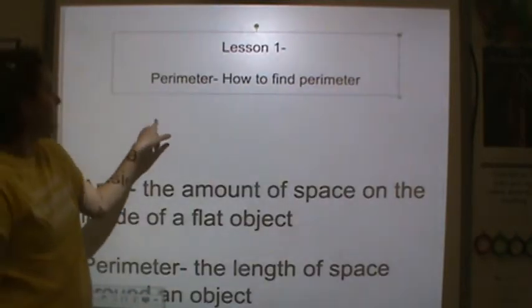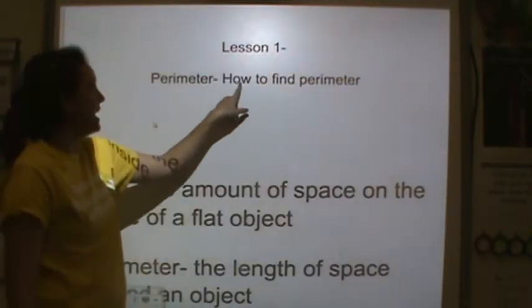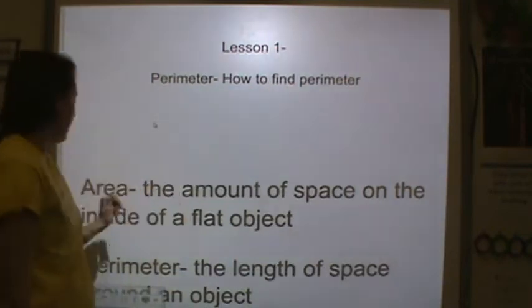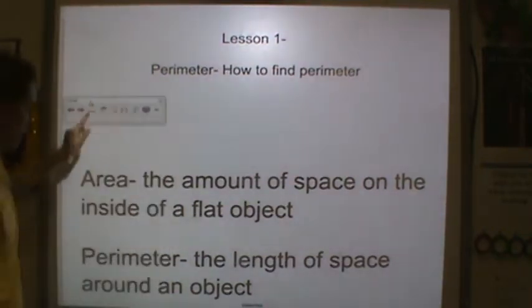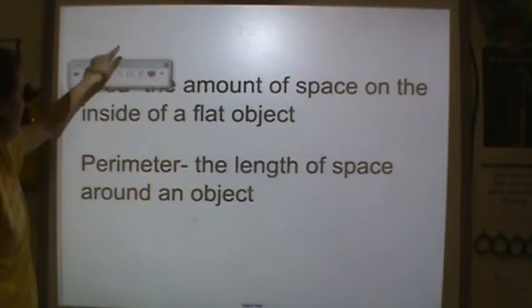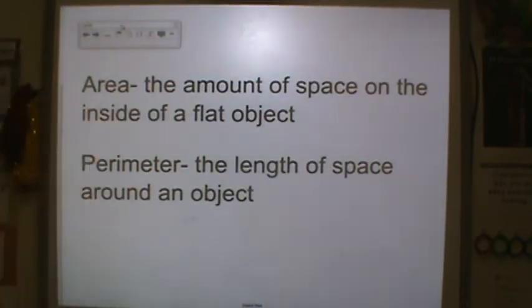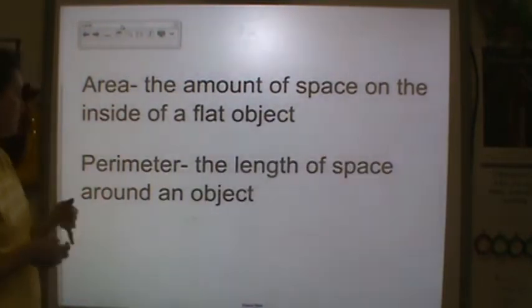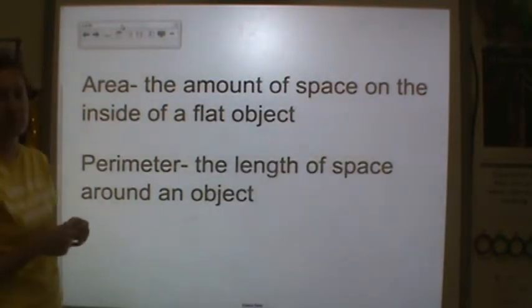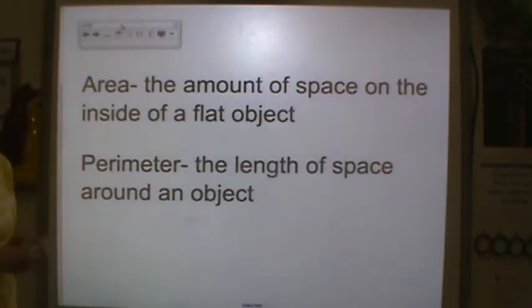Lesson one is specifically on perimeter and how to find perimeter. There are two definitions I'm going to need you to write down first. Area is the amount of space inside of a flat object — we're going to talk about area in lesson two. Perimeter is the length of space around an object. If you need to pause the video to write these down, please pause now.